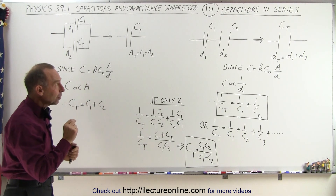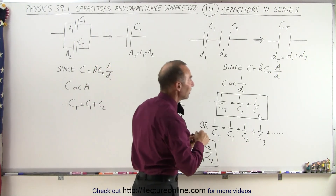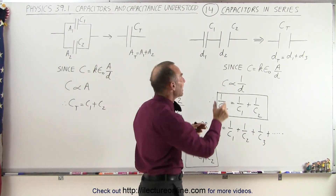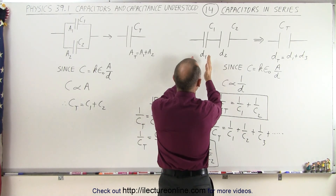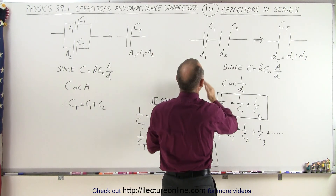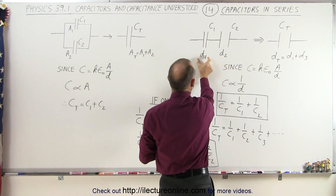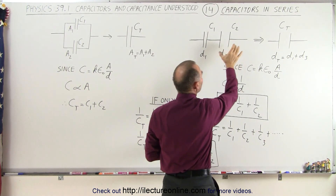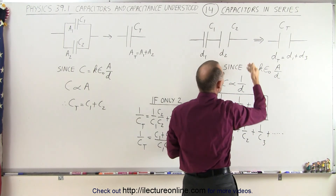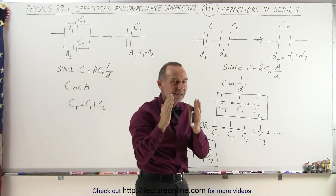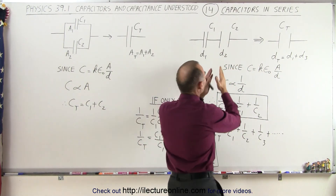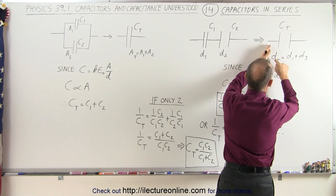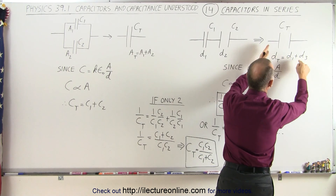But when we're taking a look at capacitors in series, it's a little bit different. It is as if we're adding the distances between the plates together. So we have capacitance 1 with distance 1 and capacitance 2 with distance 2. The sum of the two capacitors is as if we're adding the distances together — moving the plates farther apart — so the total equivalent distance is simply the sum of the two distances.